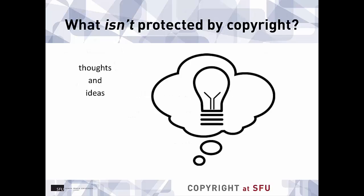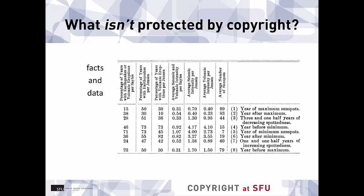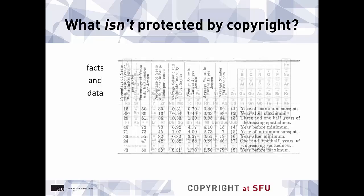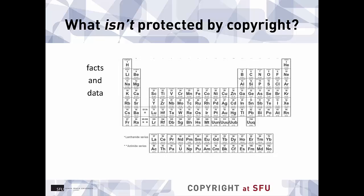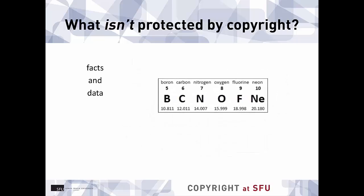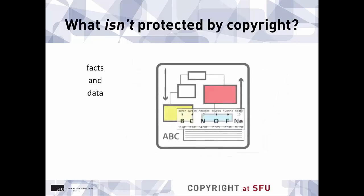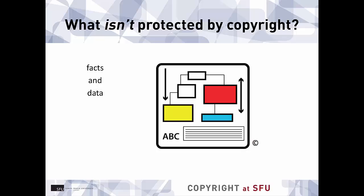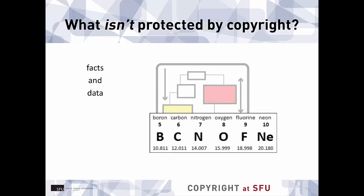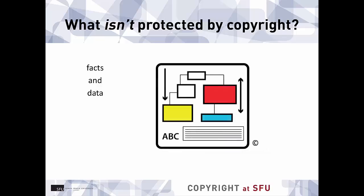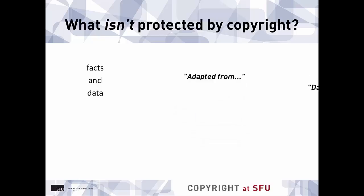Things that are not protected by copyright include thoughts and ideas, since they are not fixed — they would have to be embodied in some form to be covered. Facts and data are also not covered; for example, environmental data or the periodic table of the elements are not copyrightable, and neither are depictions of data that don't meet the minimum originality requirement, like simple tables or graphs. However, if someone takes that data and creates something original from it, like a narrative description, a video, or a more original visual like a diagram or poster, those works would most likely be protected by copyright. You could still take the raw data from any of those works and use it without permission, but not the text, video, or poster itself created by that other author, and you would always cite the source of that data.